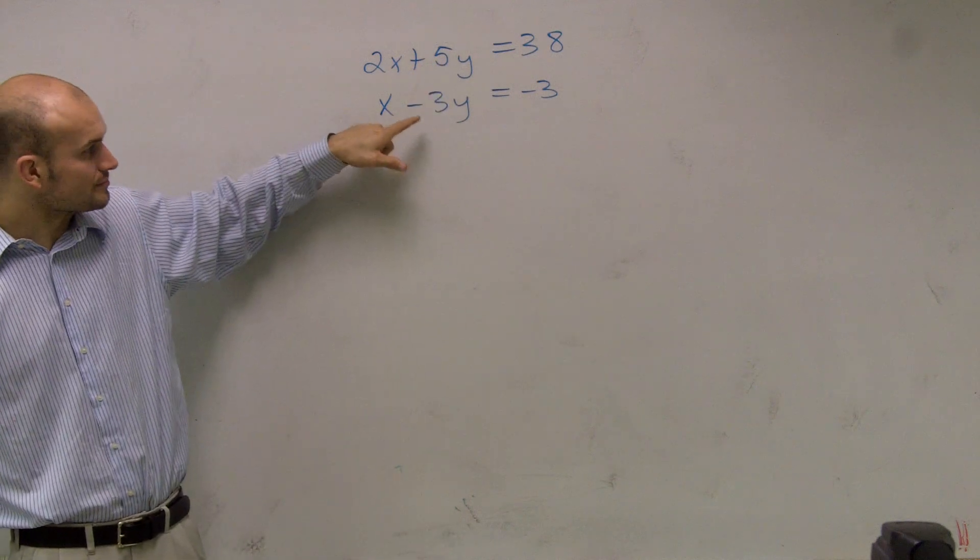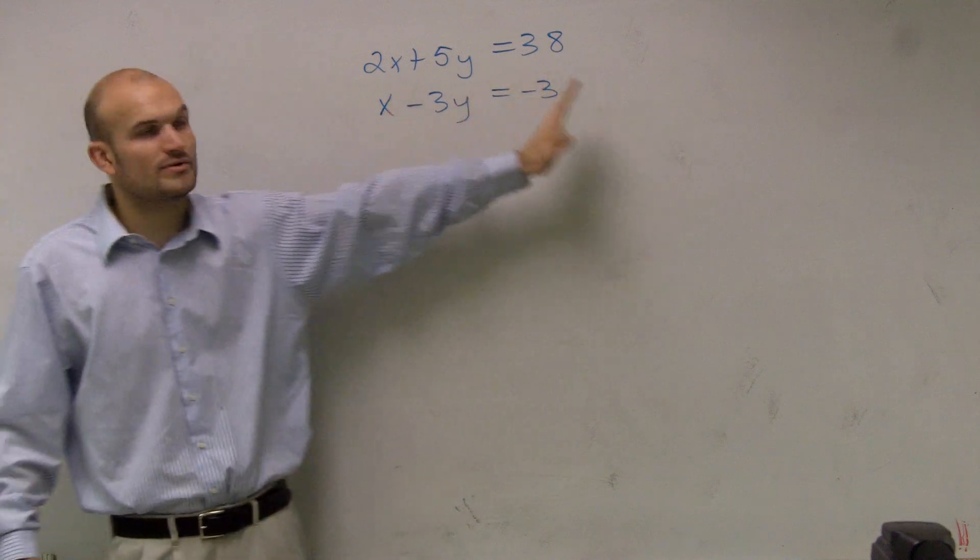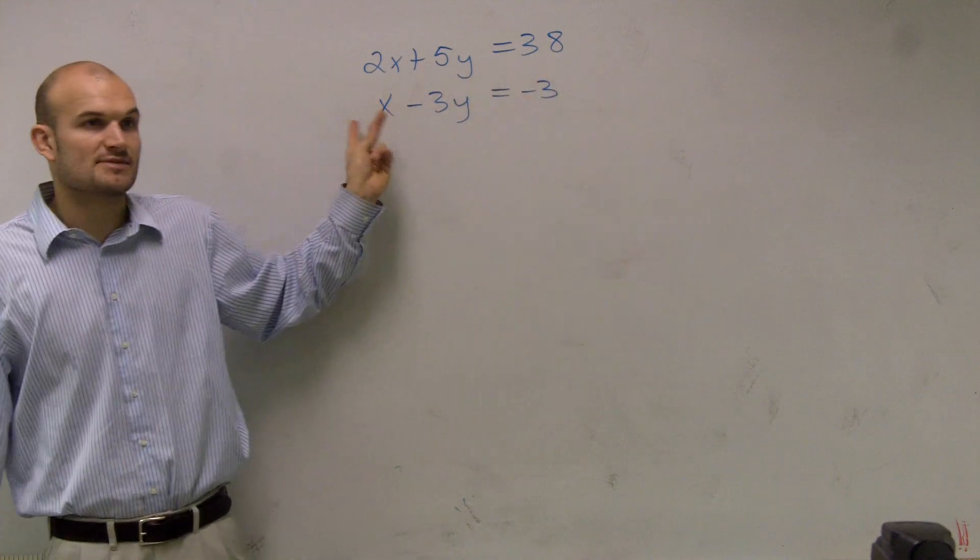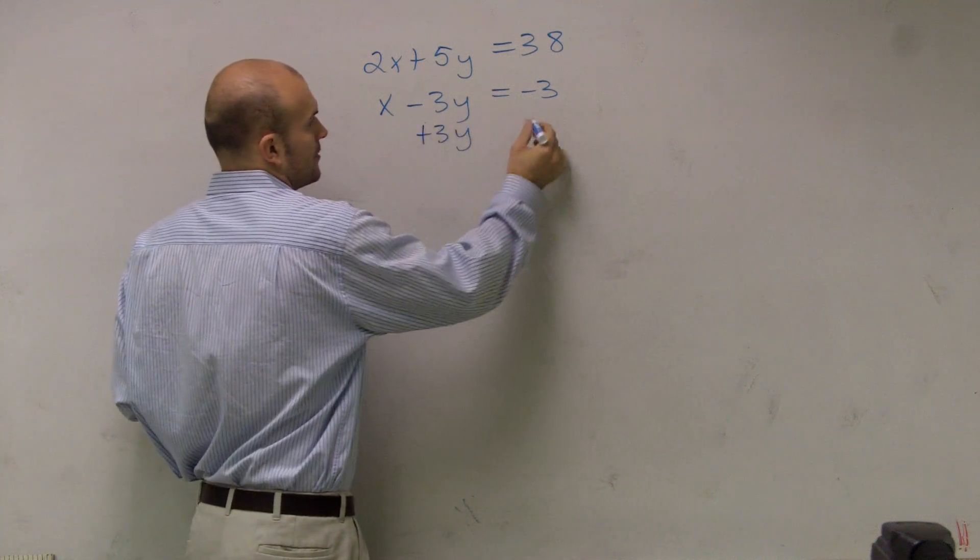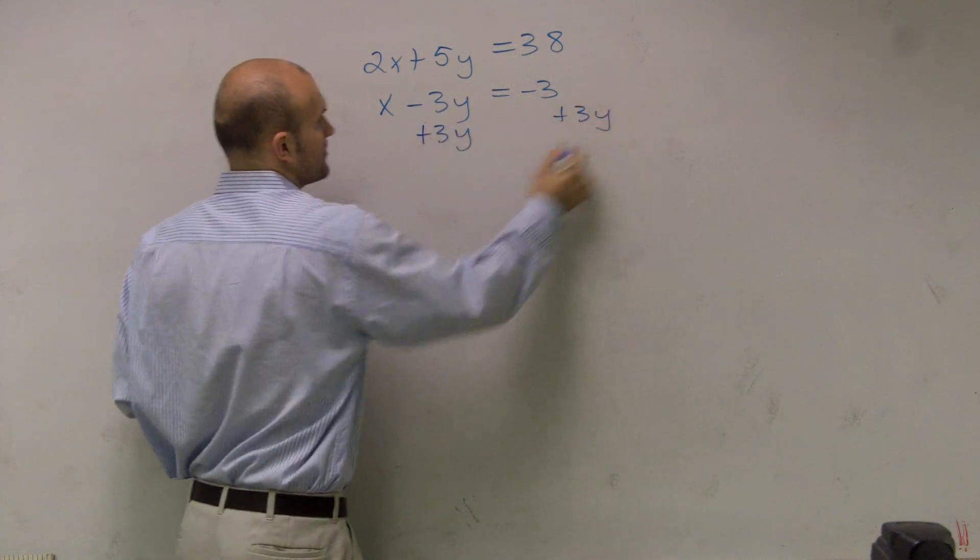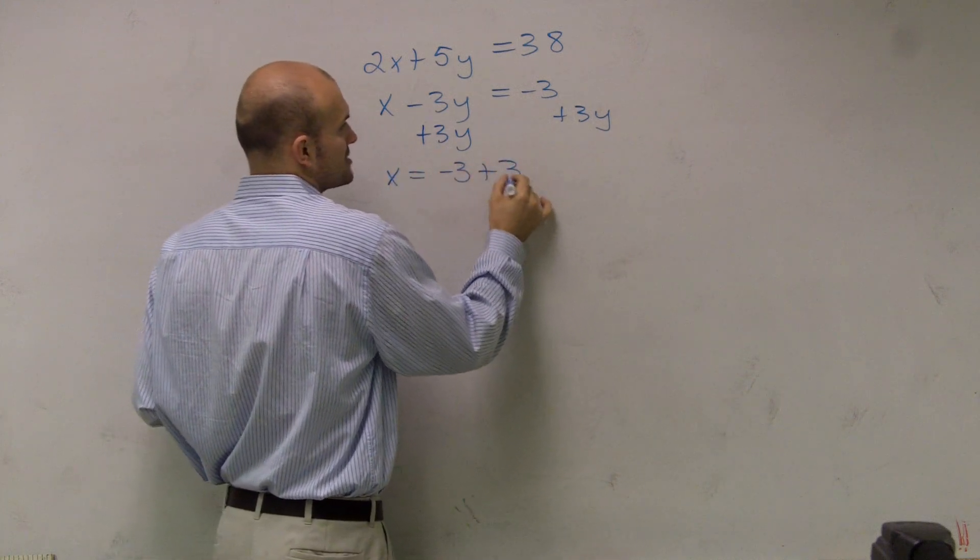However, if I look at this equation, it's really easy for me to solve for x. All I have to do is add the 3y to the other side, since 1 is my coefficient for x. So that's what I'm going to do. Let's just add the 3y to the other side. Therefore, I'm left with x is going to equal a negative 3 plus 3y.